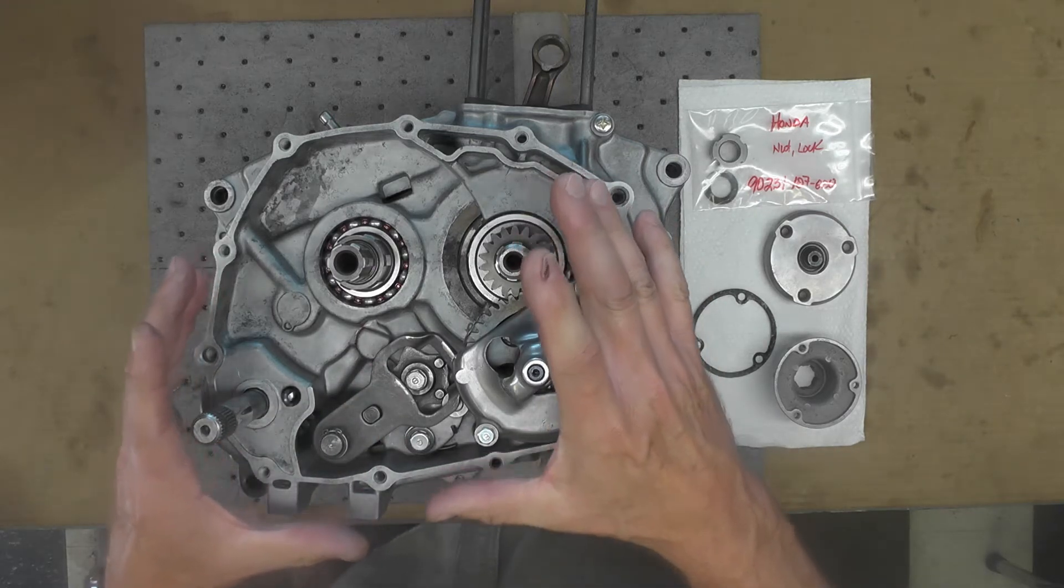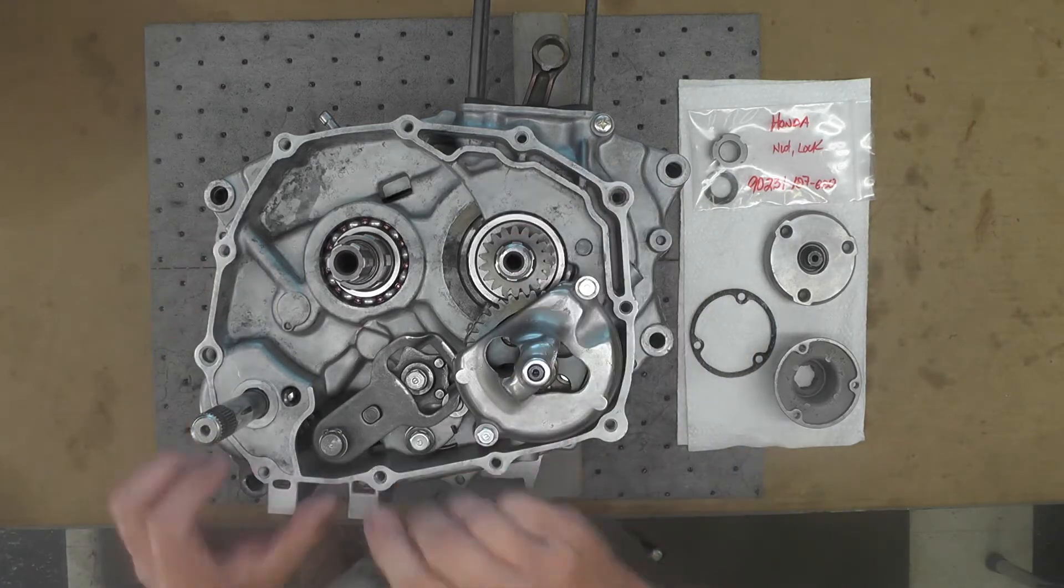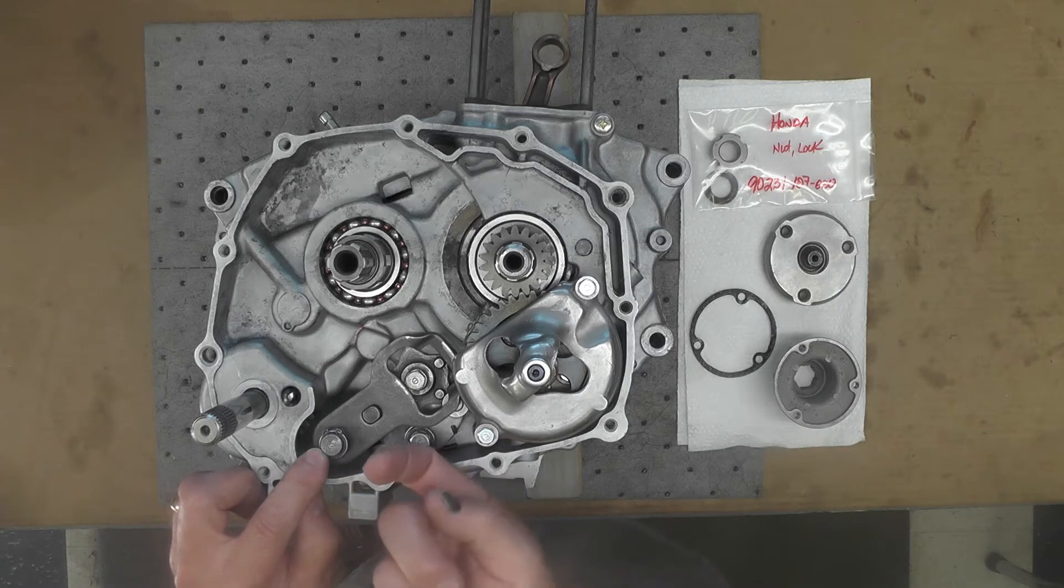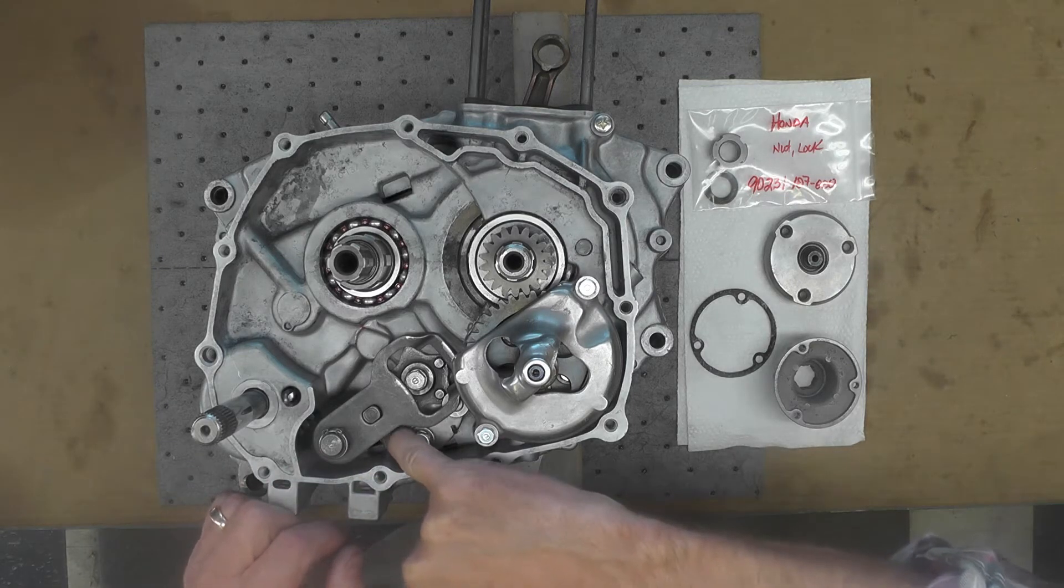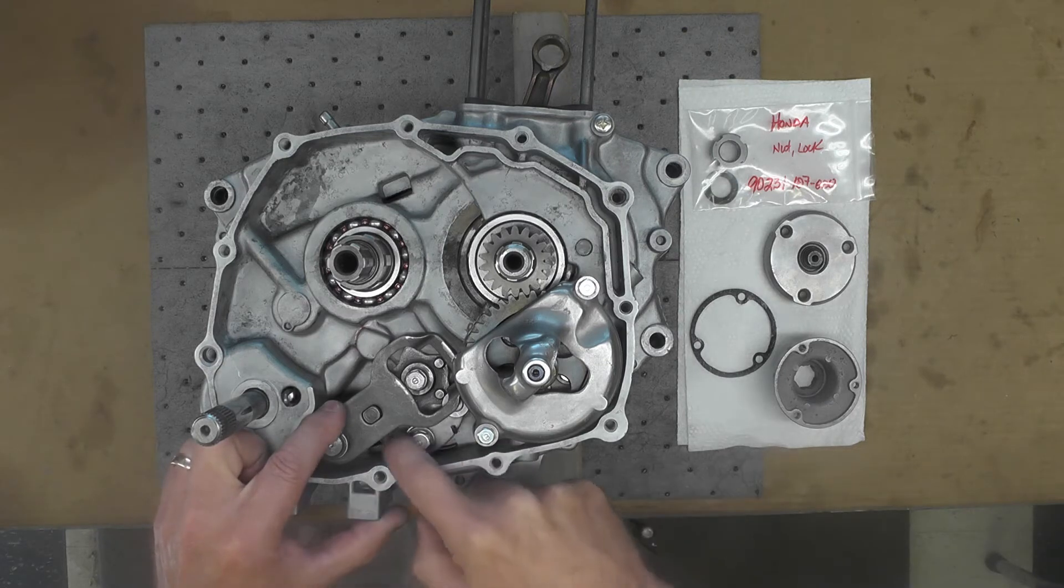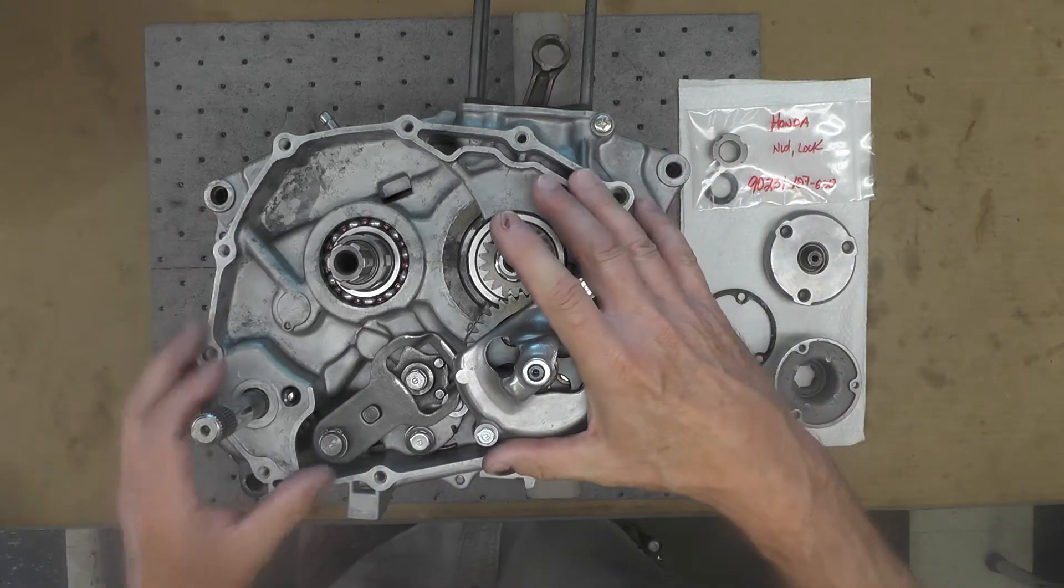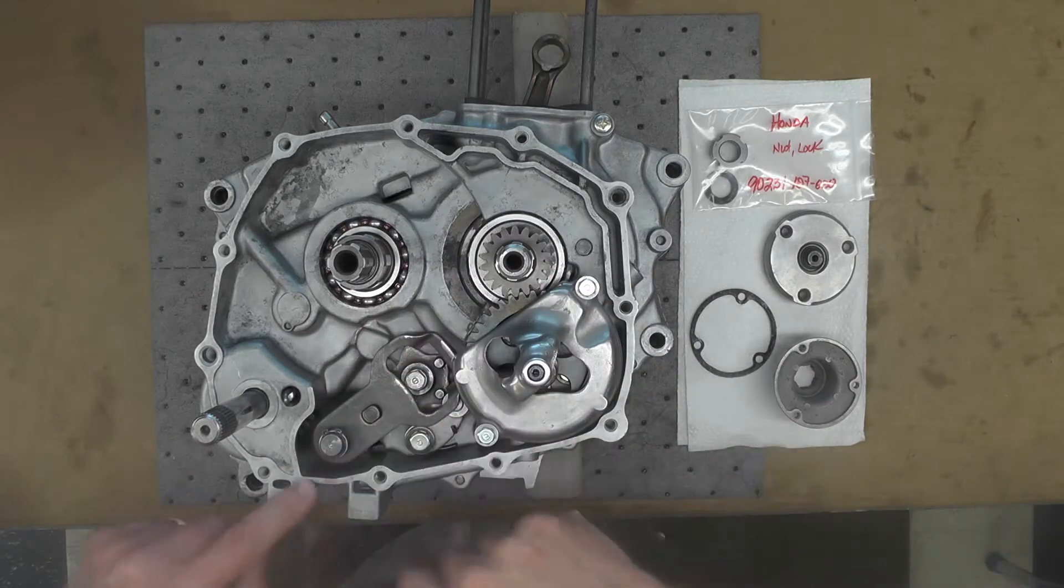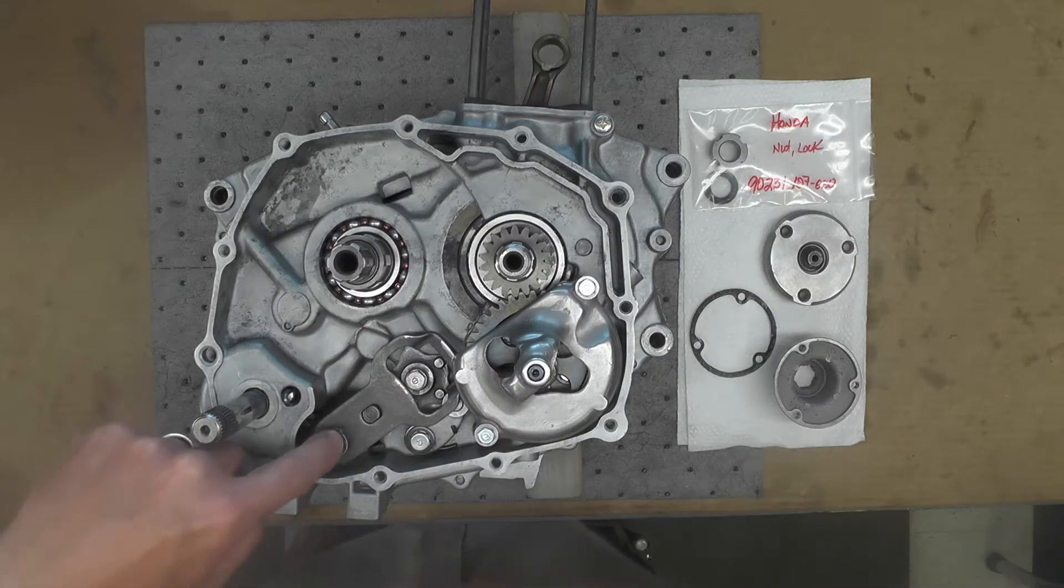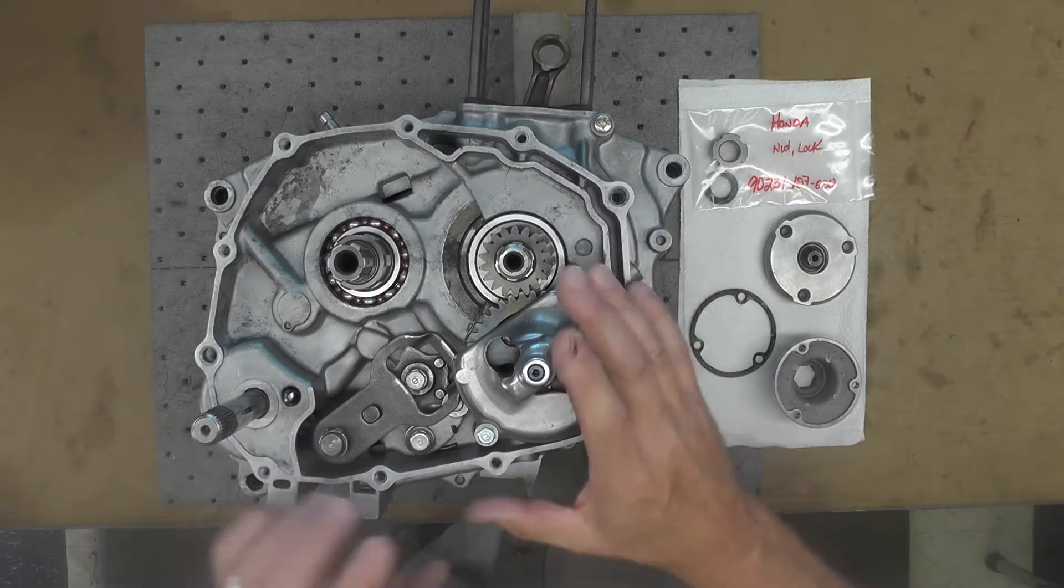One caution: if you do shift this unit with the side cover off, this shaft can actually move this way, and those little ears underneath there for the return spring can pop off the boss that's cast into the side of the case. When the side cover's normally on, there is a boss that's cast into the side cover that prevents that from happening. So just be careful. Don't ask me how I know.